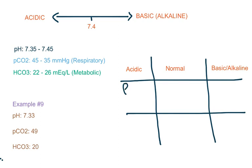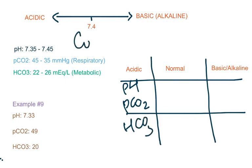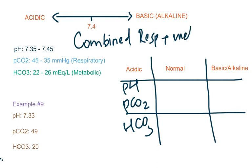In this example, pH is acidic, pCO2 is also acidic, and bicarb is also acidic. So this is termed combined respiratory and metabolic acidosis.